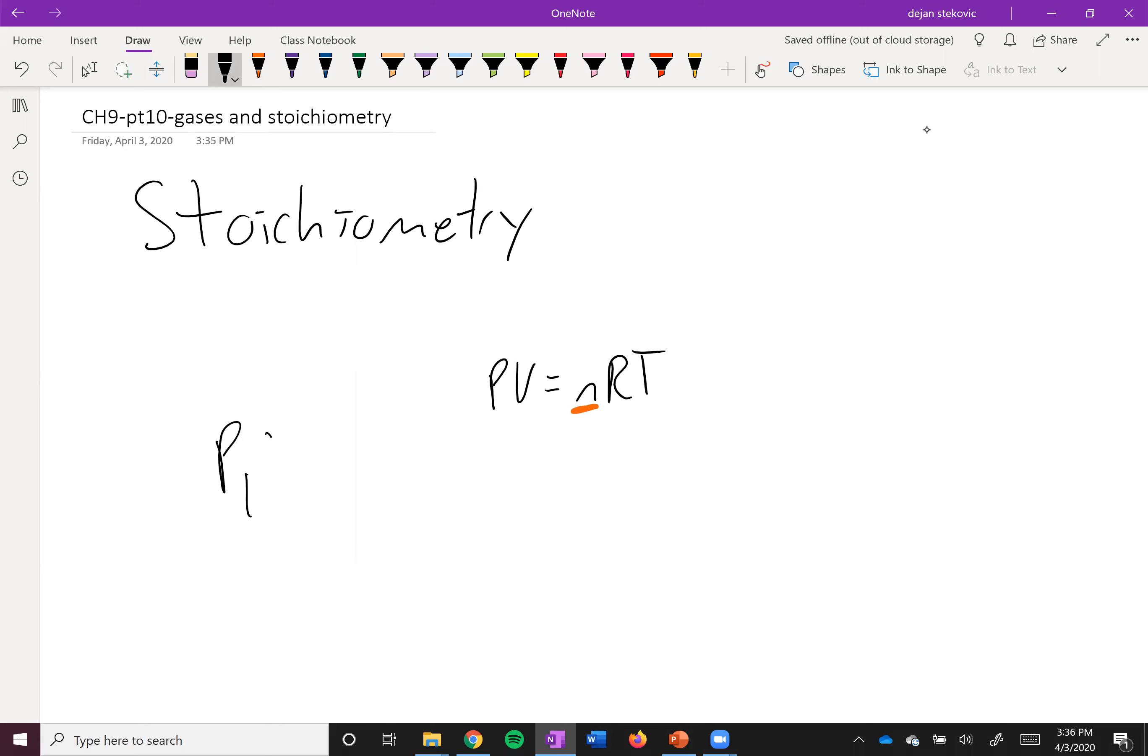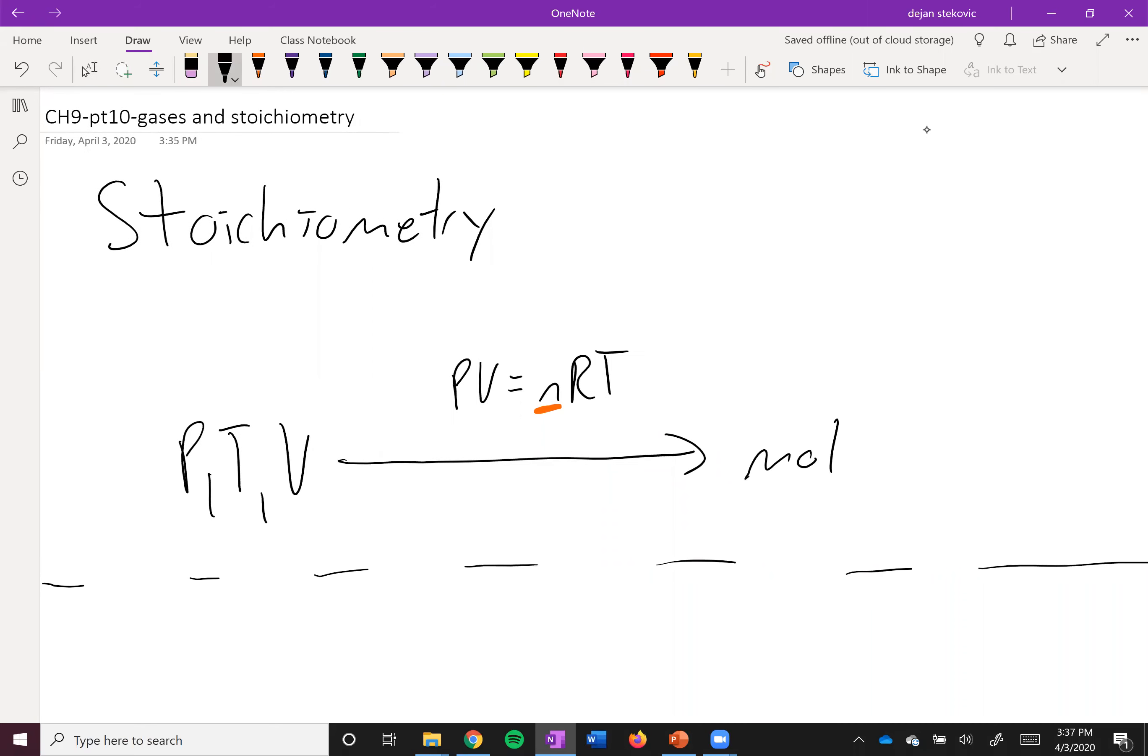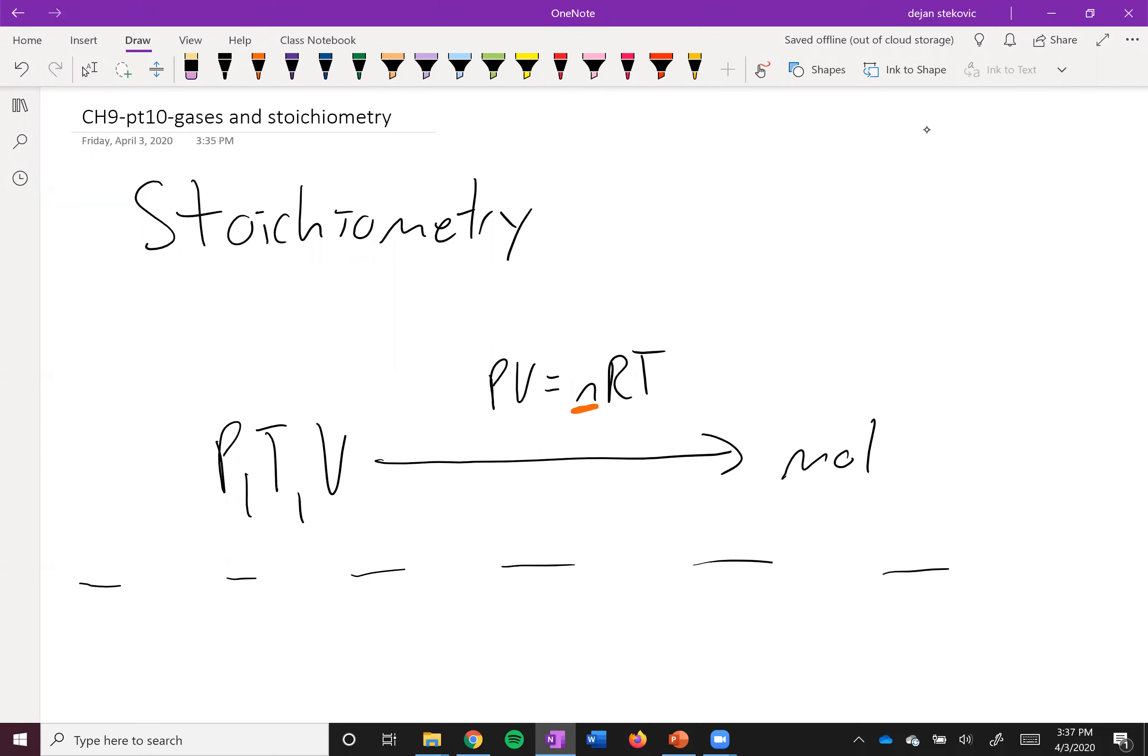So if you had pressure, temperature, and volume, you could use these values to figure out how many moles of whatever you're talking about. So it can be used as kind of a conversion factor. It's not really a conversion factor, but you can use the equation to go from these properties to moles.